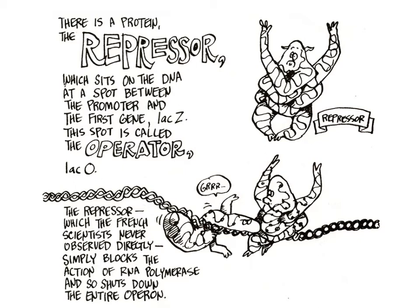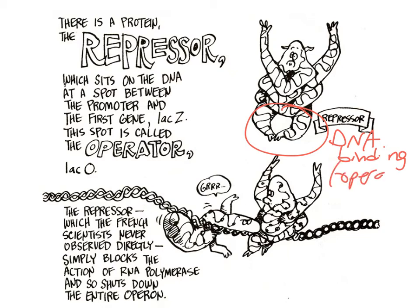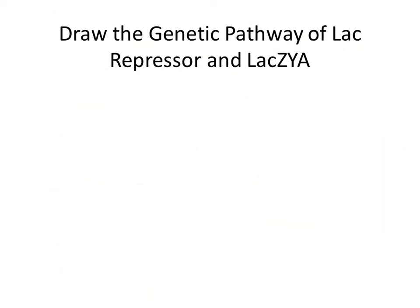The lac repressor cartoon — its legs represent the DNA binding domain. Lac repressor has one site that recognizes a specific sequence at the operator. There's a specific nucleotide sequence — the operator sequence — that lac repressor will recognize and bind to. What are its arms going to bind to? We're going to see that in just a second.